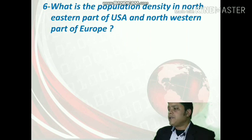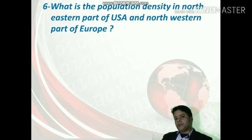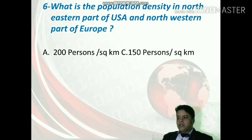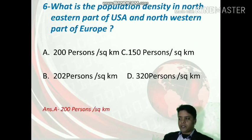The next question is: what is the population density in the north-eastern part of the USA and north-western part of Europe? These are the most developed parts of the world. The options are 200, 150, 202, or 320 persons per square kilometer. This area has a density of 200 persons per square kilometer.